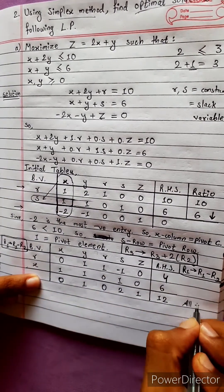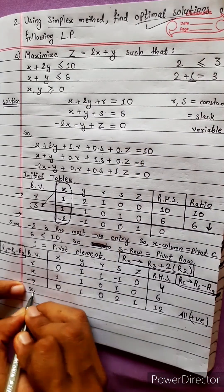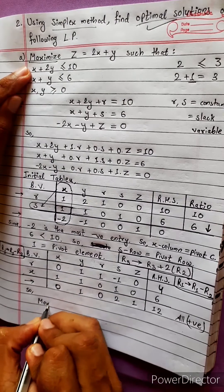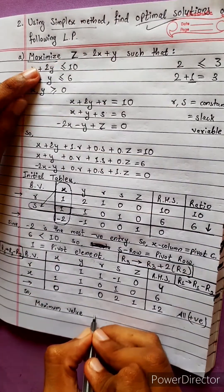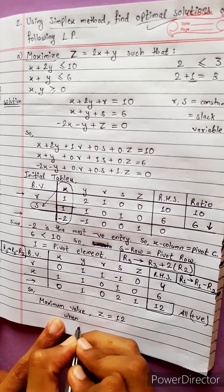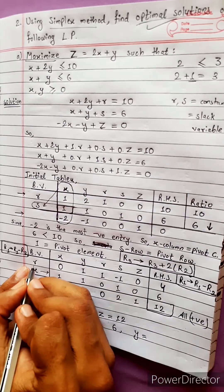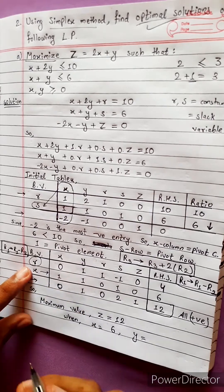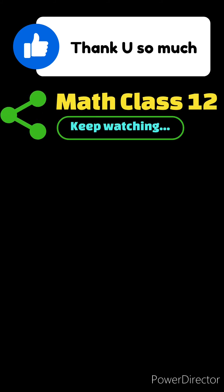All entries in the objective row are now positive, so this is the optimal solution. The maximum value of Z equals to some value. x equals to 6, y equals to values including 1, 3, 3, and the sequence gives us the maximum value. The optimal solution has been reached.